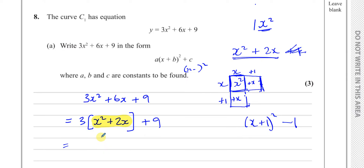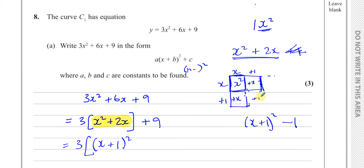Applying this to our expression, focusing on what's inside the bracket: 3 times (x squared plus 2x). I take half the coefficient of x, which is 1, and write (x plus 1) squared. But (x plus 1) squared expands to x squared plus 2x plus 1, so I must subtract that extra 1 inside the bracket. Then I still have plus 9 from outside.